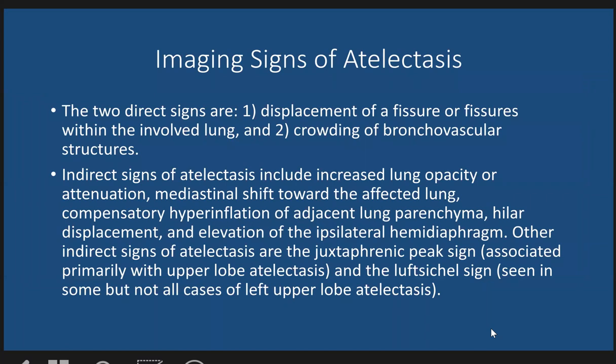Imaging signs of atelactasis or collapse include direct signs and indirect signs. The direct signs are displacement of the fissure or fissures within the involved lung, and clouding of the bronchovascular structures.